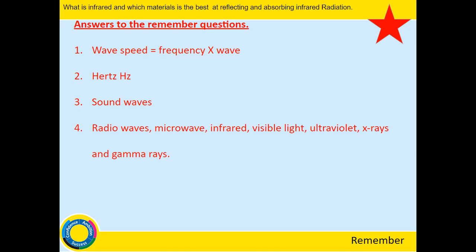Number four: the electromagnetic spectrum is radio waves, microwaves, infrared, visible light, ultraviolet light, X-rays, and gamma rays — listed from lowest frequency and longest wavelength to highest frequency and shortest wavelength.